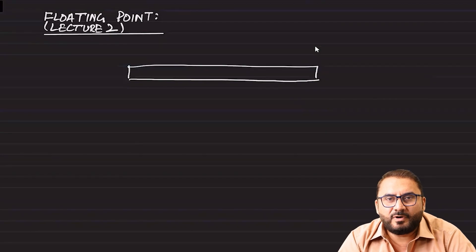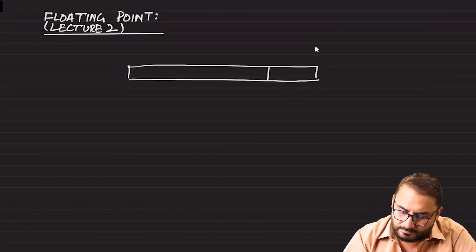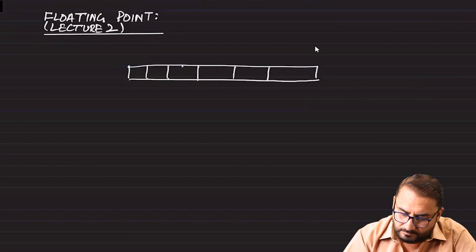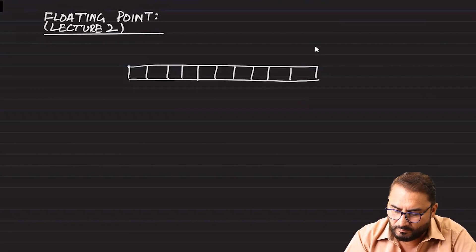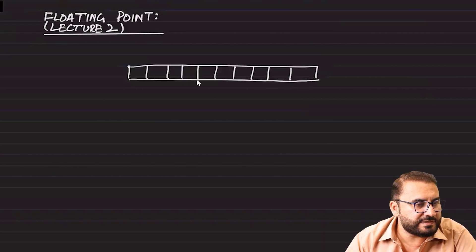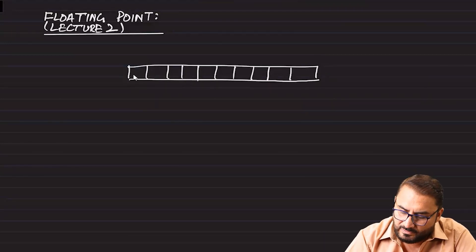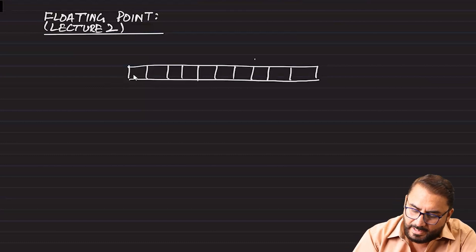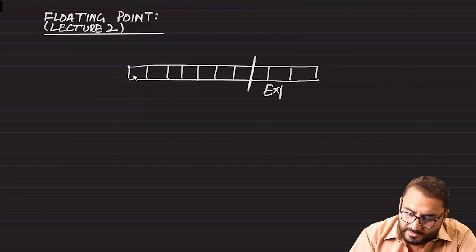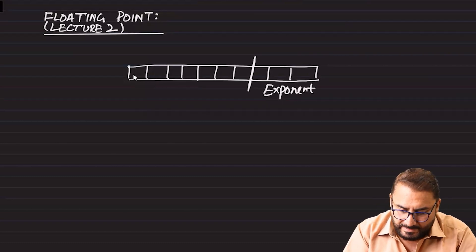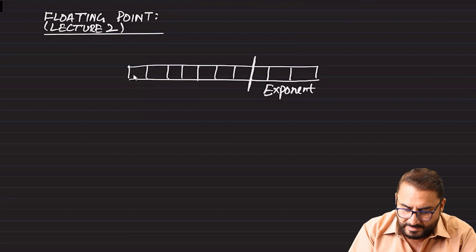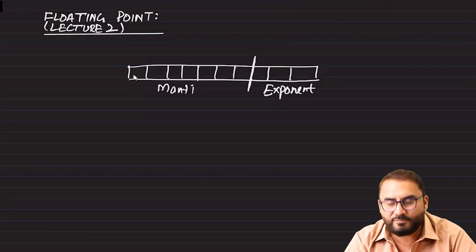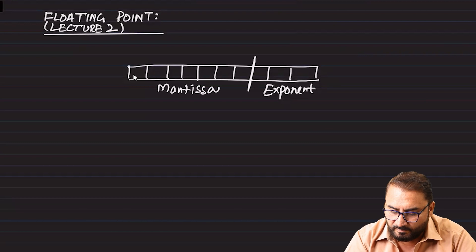Hello, and Assalamu Alaikum. This is Zafar Ali Khan. This is lecture 2 on floating point. We will start with the structure of floating point. Let's say we have 10 bits for the floating point: 1 through 10, out of which 3 bits are allocated for exponent and 7 bits are allocated for mantissa. In this, the point lies between the first two bits. The point is sometimes called radix in maths.